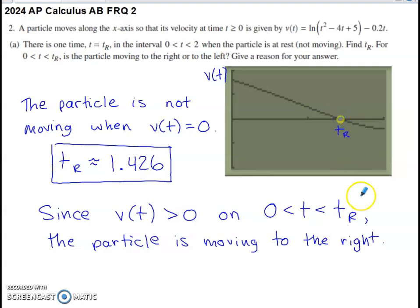Calculator's in place. You could break out the calculator. Graph v of t. I shrunk my horizontal axis to just show the range from zero to two. I think my y-axis settings go from negative two to positive two. This velocity graph is equal to zero at approximately 1.426. That's when the particle is at rest.